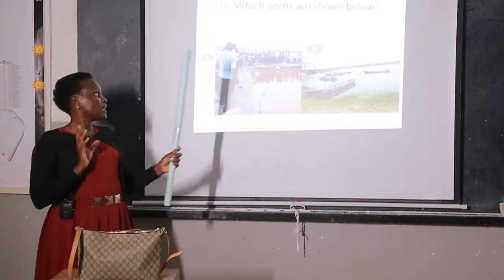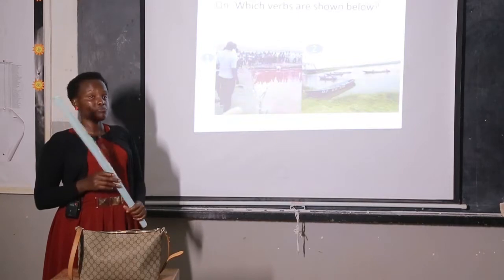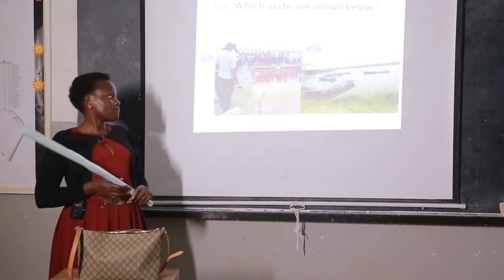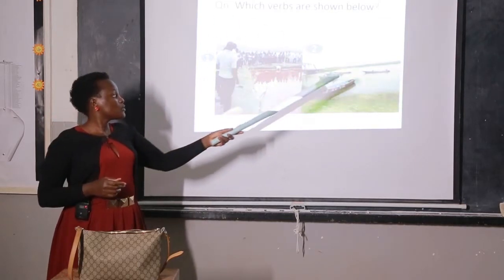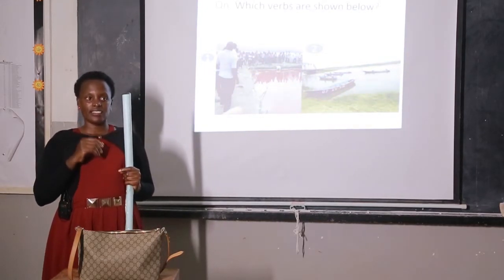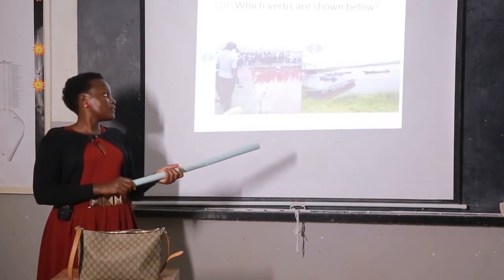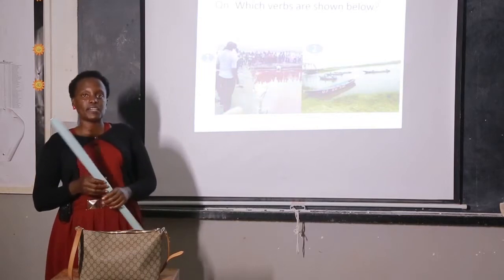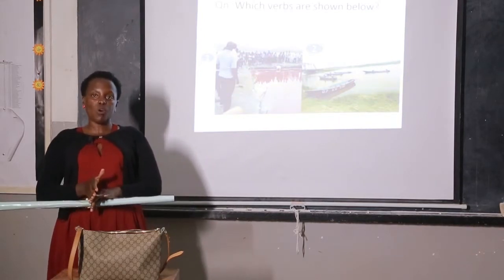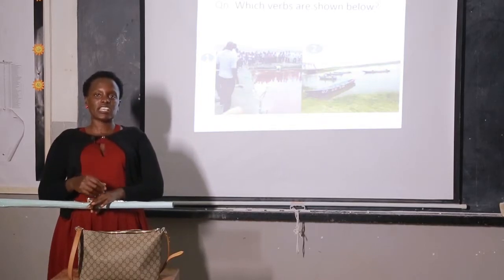Picture two — we have dugout canoes, which are means of water transport. There are people seated and they are sailing. The verb is 'sail.' In past form it becomes 'sailed,' and in participle it also becomes 'sailed.' Remember, for all means of water transport, we use the word 'sail.' You don't say 'I drive the boat' — that is wrong. We say: I sailed the boat. He sailed a ship.